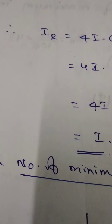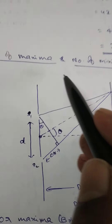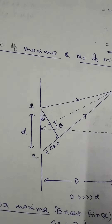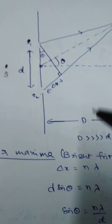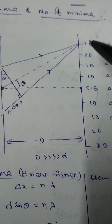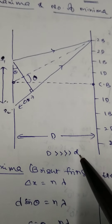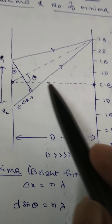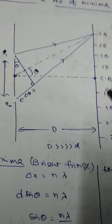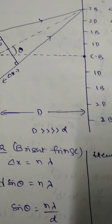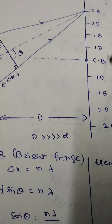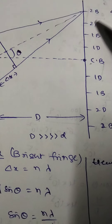Next, let us find the number of maximas and number of minimas. In the YDSE experiment, S1 and S2 are the two slits illuminated by a monochromatic point source. The separation is d, screen distance is D with D >> d. At the midpoint there is always a central bright band. According to the interference experiment, alternate bright and dark bands are formed on the screen: central bright, first dark, first bright, second dark, second bright, and so on.